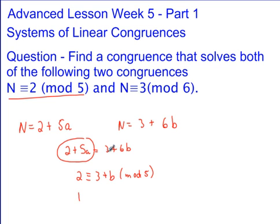And so we get b equals negative 1 mod 5. Well, negative 1 mod 5 is just the same as 4 mod 5. So we can think about this solution as being 4 mod 5. Now what I need to do is I need to recognize that that means my b is equal to 4 plus 5 times some c.